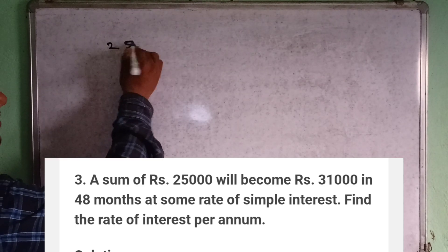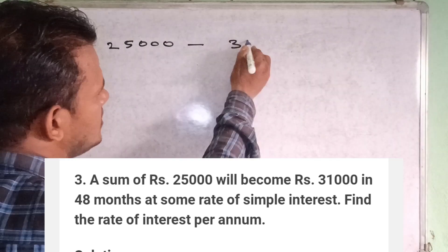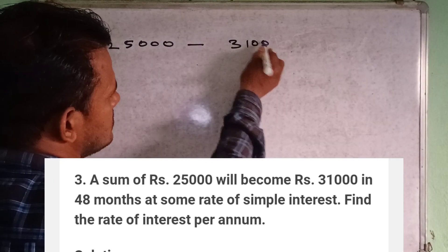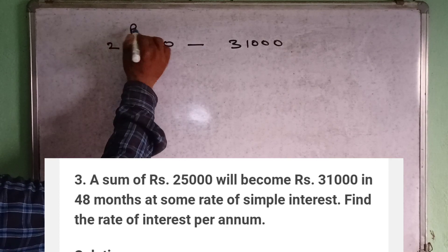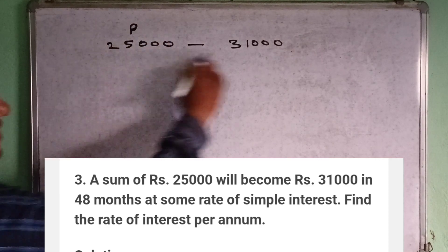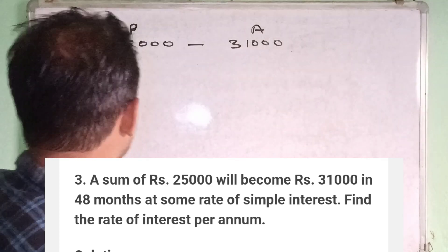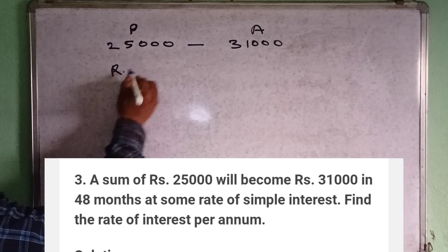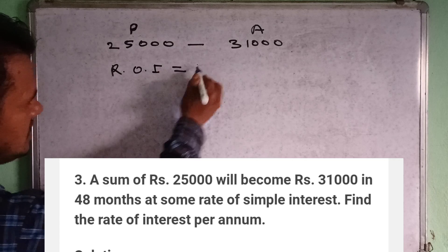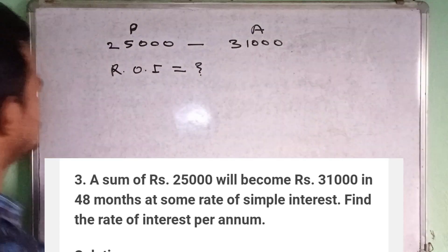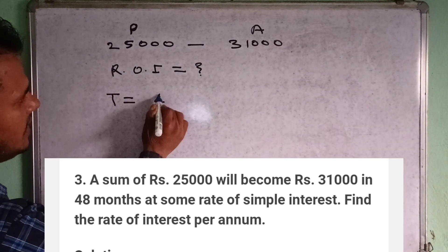25,000 becomes 31,000, so 25,000 is the principal and 31,000 is the amount. The rate of interest is not given — we need to find it. The time given is 48 months.